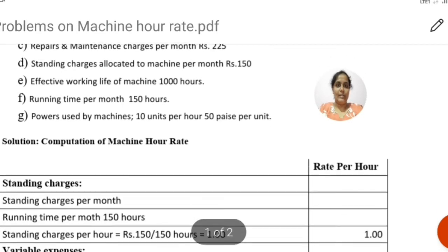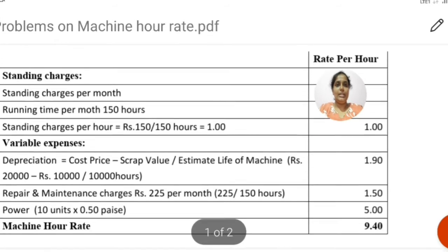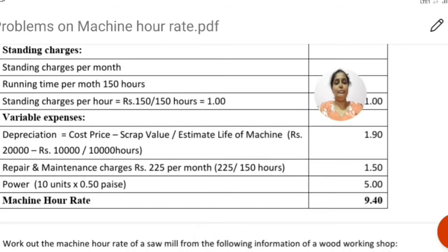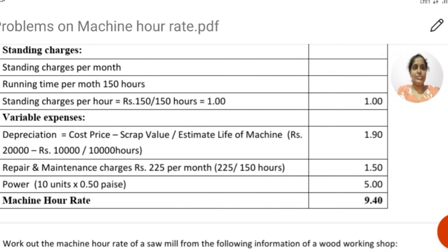Now let us look at the solution. In the solution, we divide expenses into two types: one is standing charges (fixed expenses) and the other is variable expenses. Fixed expenses remain constant in total but change per unit, while variable expenses remain the same per unit but vary in total. We will divide them accordingly. First, let us look at fixed charges. Running time per month is 150 hours.